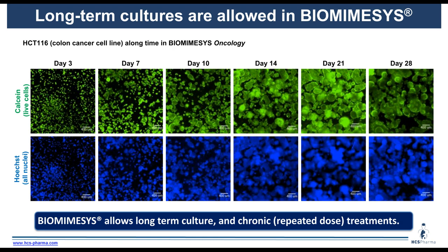Biomimesis allows long-term culture of cancer cells. Here is an example with the HCT116 colon cancer cell line from day 3 to day 28 in Biomimesis Oncology matrix. Live cells stained calcium-positive are shown in green, and all nuclei are in blue. Cells can really invade the matrix — from spherules at the beginning to even bigger structures over time, showing the cells are alive throughout. We can go much further than 28 days. With such long-term models, we can perform chronic treatments and repeated dose treatments, which is very relevant for oncology treatment paradigms.